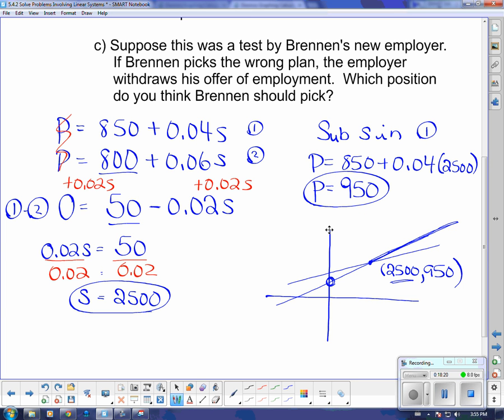So take a look at C. It says, suppose this was a test by Brennan's new employer. If Brennan picks the wrong plan, the employer withdraws his offer of employment. Which position do you think Brennan should pick? Well, if Brendan was going to be lazy, he would probably want one that starts with this higher initial value. Because he doesn't have to sell as much to begin with to get more money. But if Brendan is ambitious, and he wants to work really hard and get more money, he should pick this plan that starts off slower and then ends up climbing a whole lot faster. So which do you think the employer would like? Would the employer like an ambitious Brendan, who's going to sell a lot and make a whole lot more money in the long run? Or do you think he's going to want a lazy Brendan, who picks the higher initial value so that he knows he's not going to sell too much? I think he's going to want the ambitious Brendan.